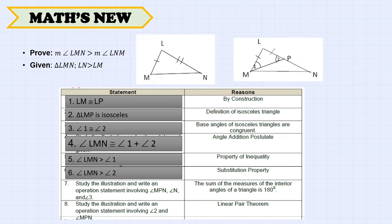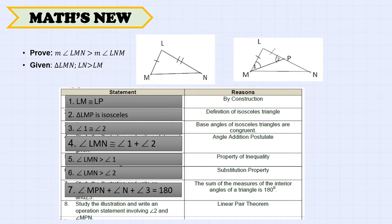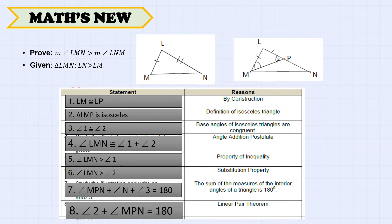From the illustration, angle MPN plus angle N plus angle 3 equals 180 degrees, because the sum of the interior angles of a triangle is 180 degrees. Also, angle 2 plus angle MPN equals 180 degrees because they are a linear pair.